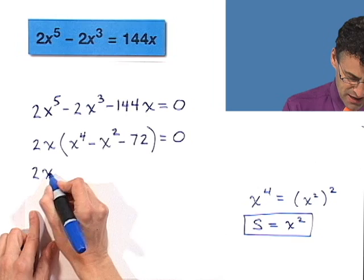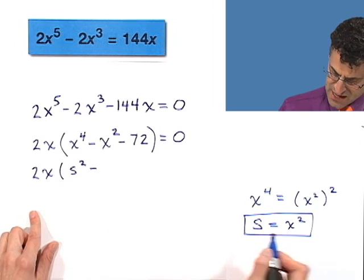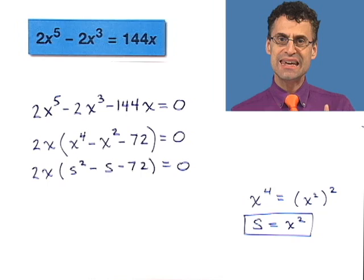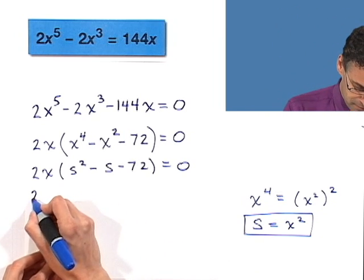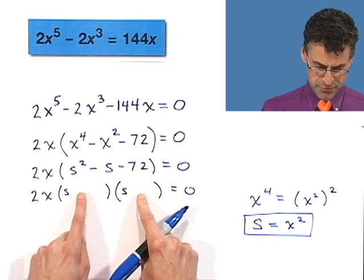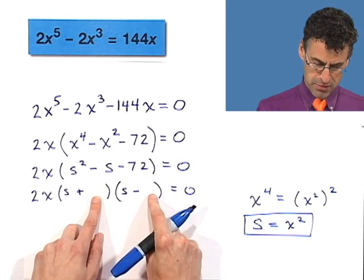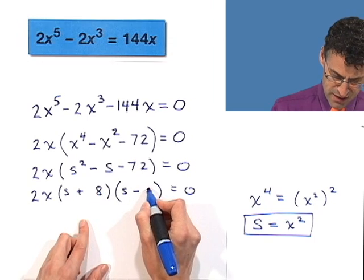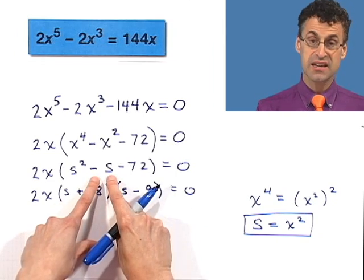I can rewrite this as 2x times, and then in place of x to the fourth, I can put in s squared, then minus, and then x squared is just s, minus 72. And now you realize it was a quadratic in camouflage. So now I can look at this as a quadratic and maybe I can actually factor it. I'm going to have an s here and an s here. This tells me I'm going to have different signs, opposite signs, so a plus and a minus. I need two numbers that multiply to give 72, but when I subtract them, I'm going to get negative one. I think if I put an eight in here and a nine in here, I'm going to win because 8 times negative 9 is negative 72, and 8s minus 9s is negative s. So this checks, actually.